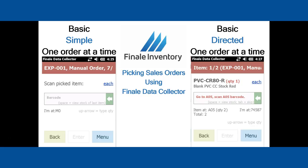Another option is to change the settings in the software on the handheld and put it into what we call DIRECTED mode. BASIC DIRECTED is still just one order picking at a time, but in DIRECTED mode it will actually tell you which item to pick on the order, how many you should pick, and where to go in your warehouse if you have multiple locations where products are stored. It will direct you to each area in proper order, sorting warehouse locations alphanumerically, to make your path through the warehouse most efficient. You'll see feedback on the scanner showing where it's picking from and how many are in that location.